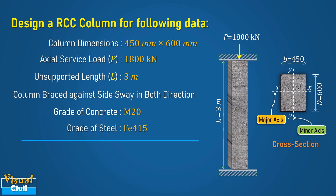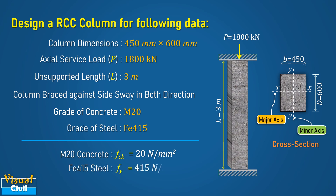Now get the values of FCK and FY. The value of FCK for M20 grade concrete is 20 N per mm². The value of FY for Fe415 steel is 415 N per mm².